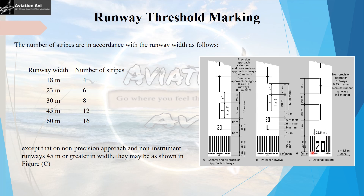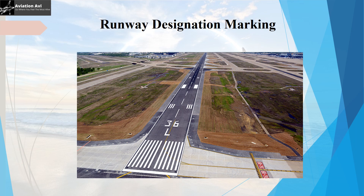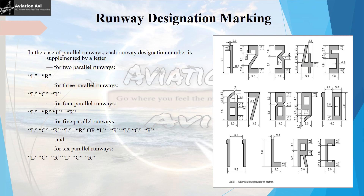The runway designation marking is a two-digit number — the whole number nearest to one-tenth of the magnetic north bearing, viewed from the direction of approach. If this gives a single digit, a zero is prefixed. For parallel runway systems, the runway designator is supplemented by letters: L for left, R for right, and C for center, referenced from the direction of approach.